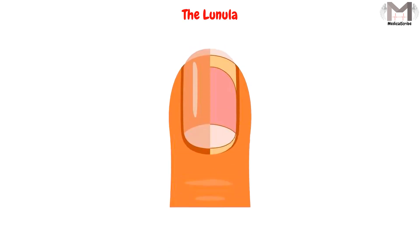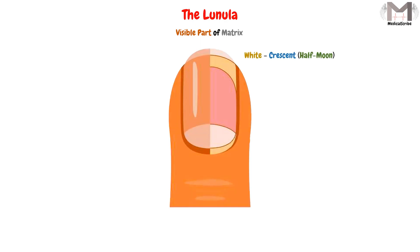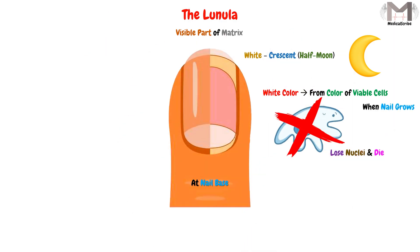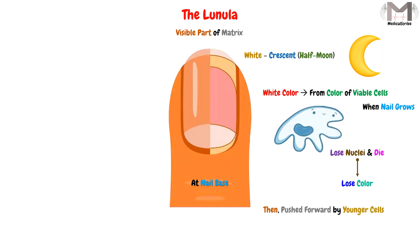The last topic today is the lunula. The lunula is the visible part of the matrix that we can see as a white, crescent or half-moon shaped structure at the nail base. This whitish color comes from the viable cells that exist in this region. When the nail grows, these cells lose their nuclei and die, losing their color and becoming transparent, then are pushed forward by younger cells which take their place.